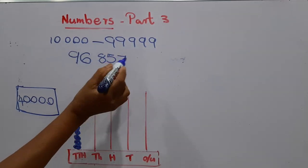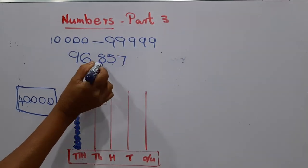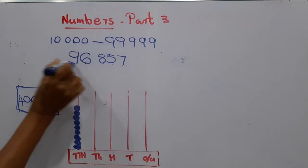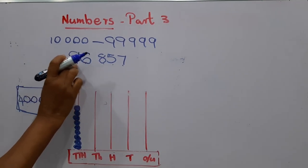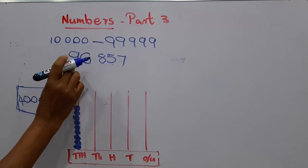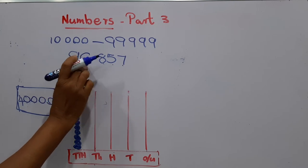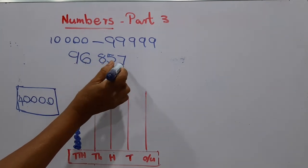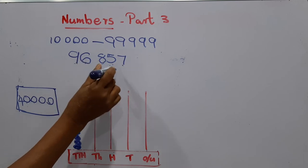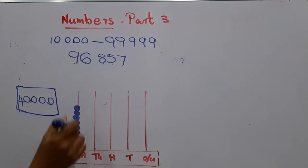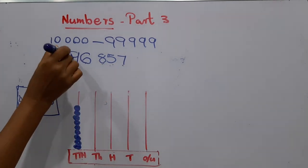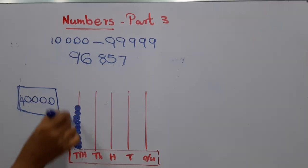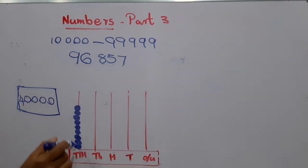This is the ones place, tens place, hundreds place, thousands place, and ten-thousands place. Nine ten-thousands means ninety-six thousand eight hundred and fifty-seven. Shall we represent this number on the abacus? Under ten-thousands, there must be nine rings.